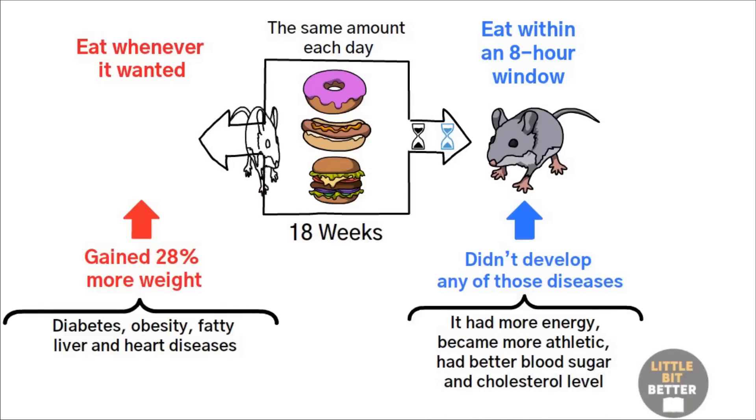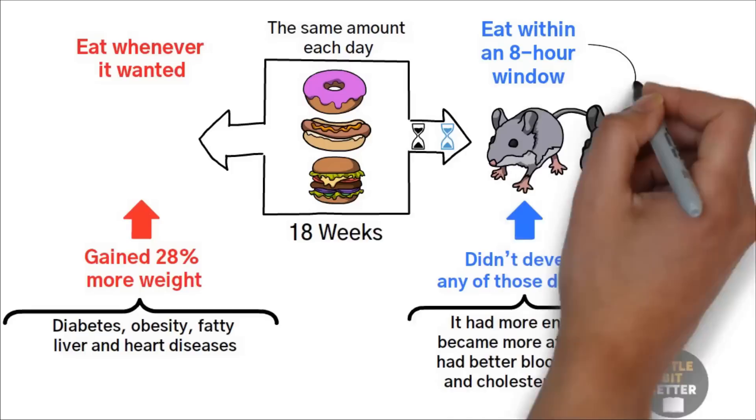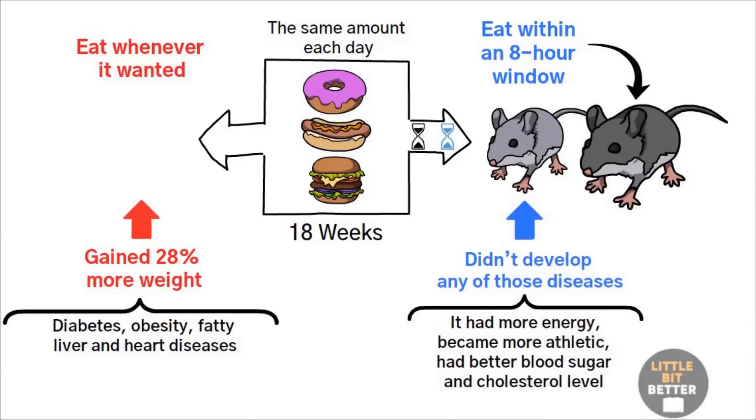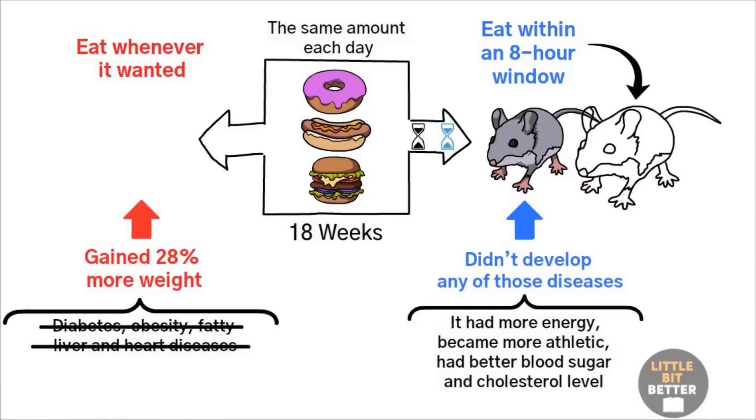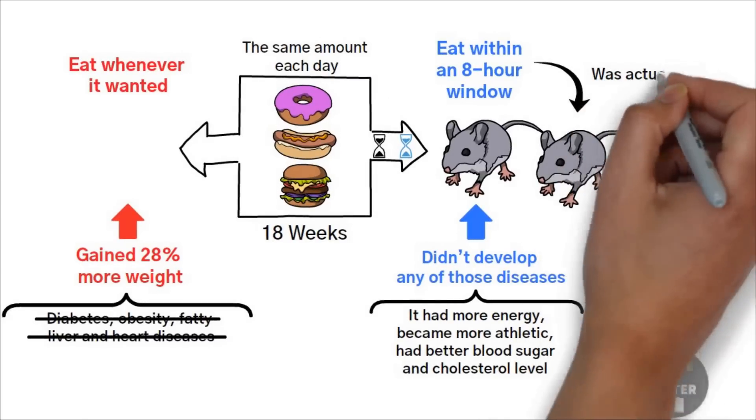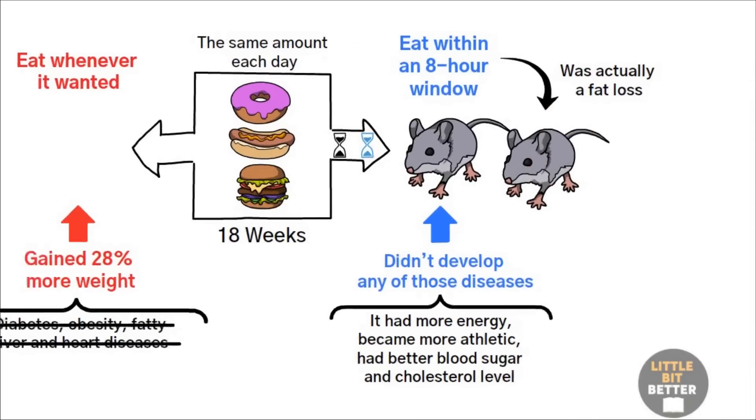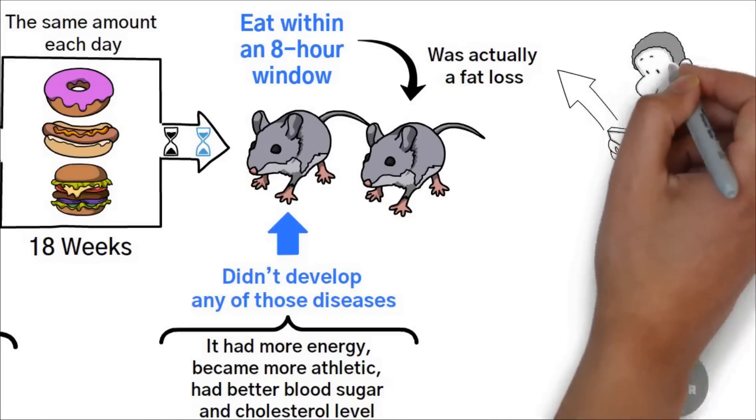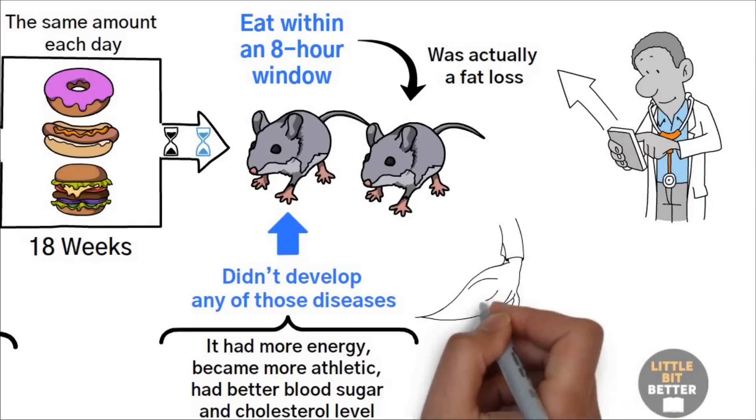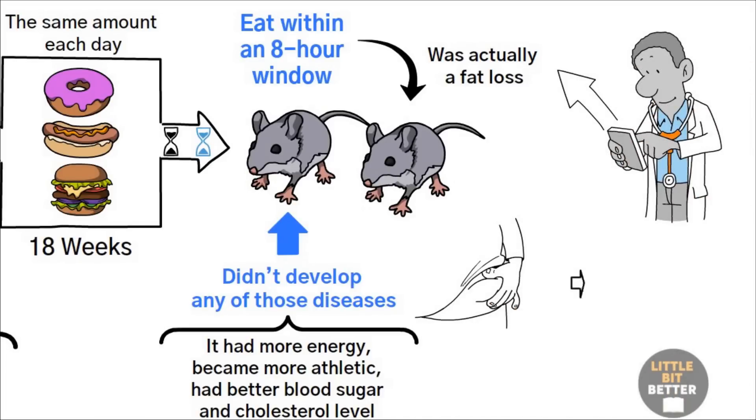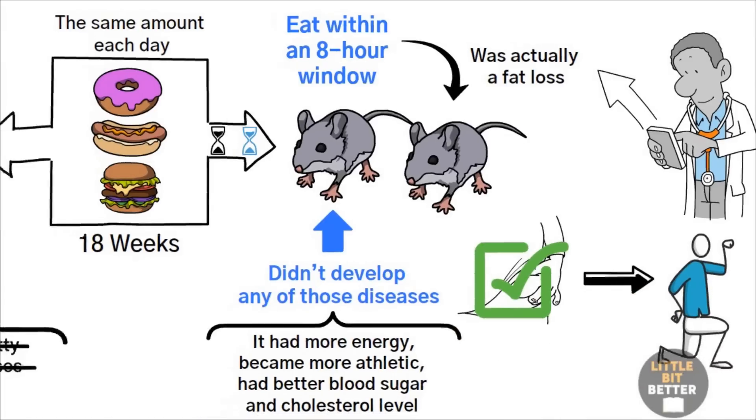Here is another surprising finding. When the sick and overweight mouse was put in the same limited feeding cycle as its sibling, the diseases that were developed started to disappear without any medication. Not only that, it also started to lose weight, and a huge portion of the weight loss was actually fat loss, which was another interesting finding because many times when weight loss happens along with the fat, a portion of muscle mass is also lost. However, in this case, it was mainly fat that was lost.